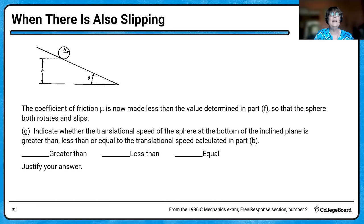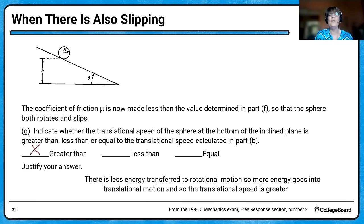What if we made mu less than the value determined — so now the sphere rotates and slips? At the bottom of the incline, would the translational speed be greater than, less than, or equal to that calculated before? Greater — because with slipping, less energy is transferred to rotational motion, so more energy from gravitational potential can go into translating the object down the incline. That's why it'll go faster at the bottom if there's slipping.